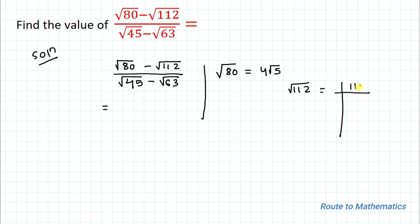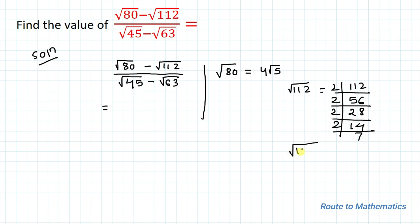Similarly, we find the value of root 112 through prime factorization. Since the last digit is 2, which is even, we divide by 2 to get 56, then by 2 to get 28, again by 2 to get 14, and again by 2 to get 7.